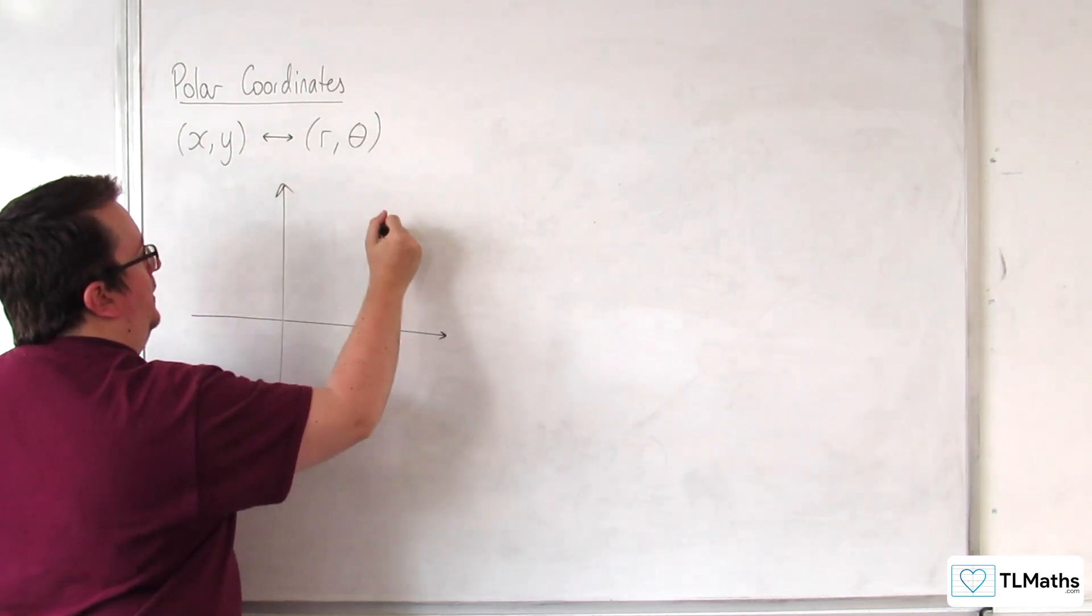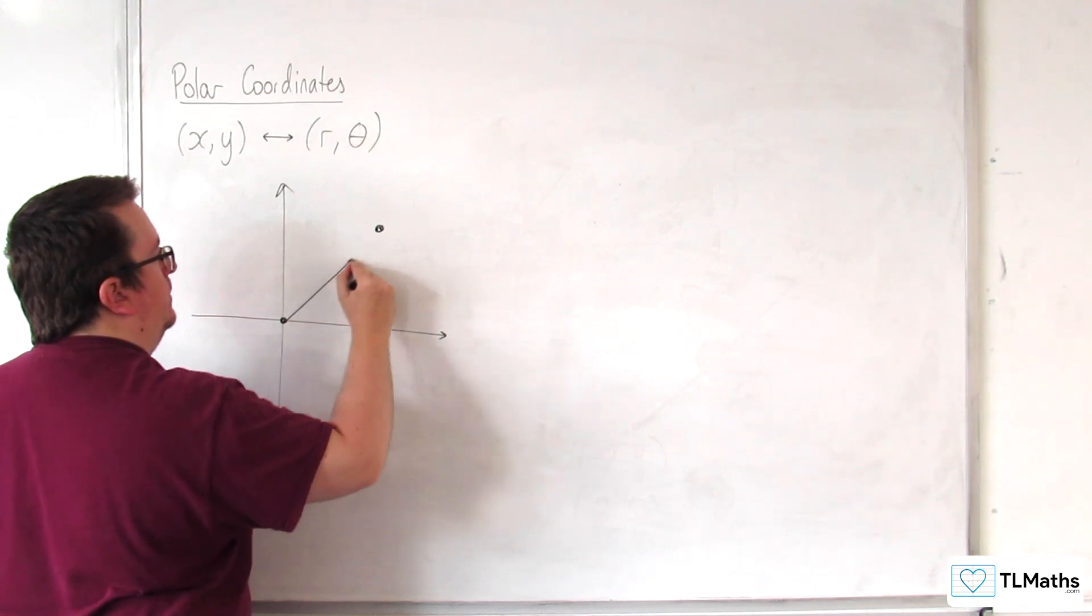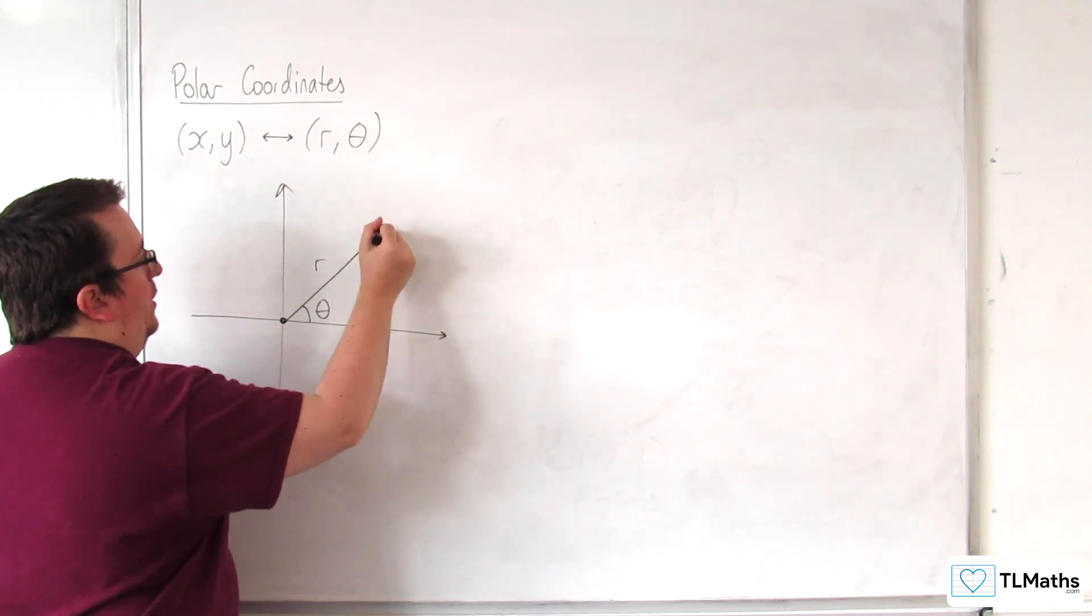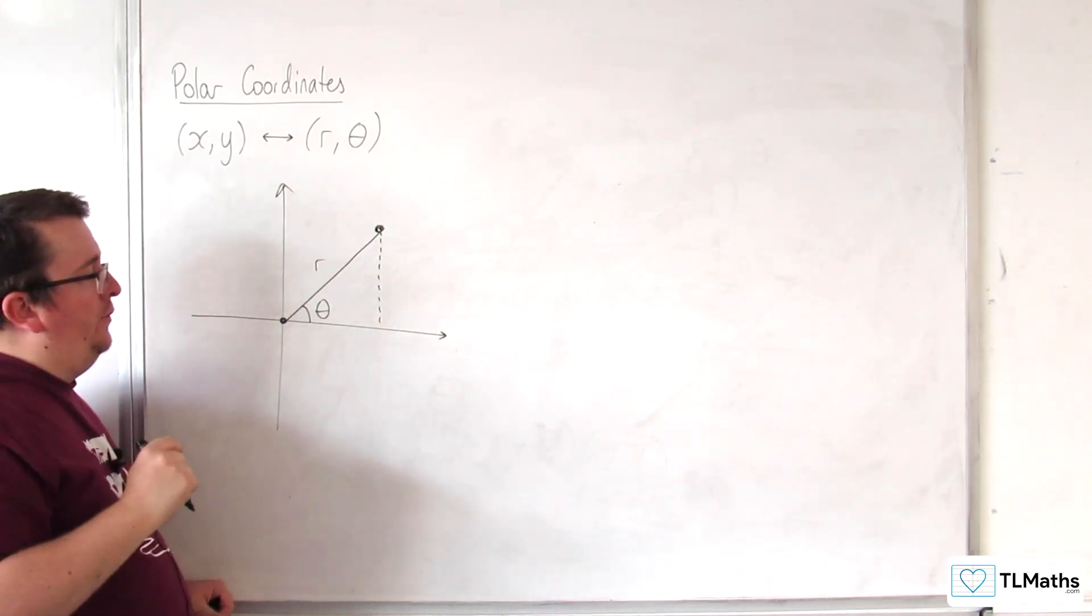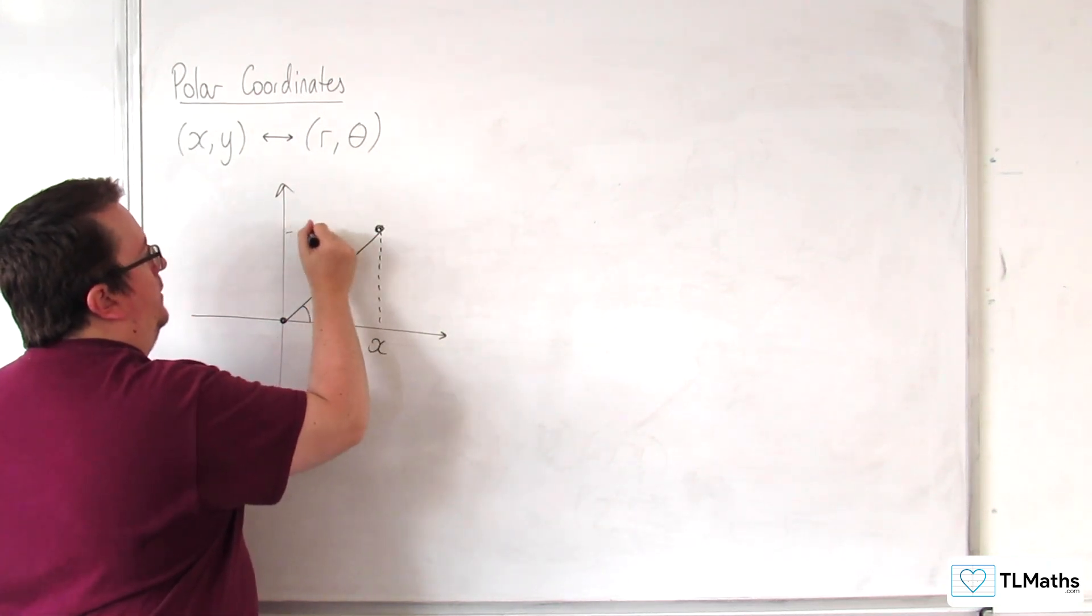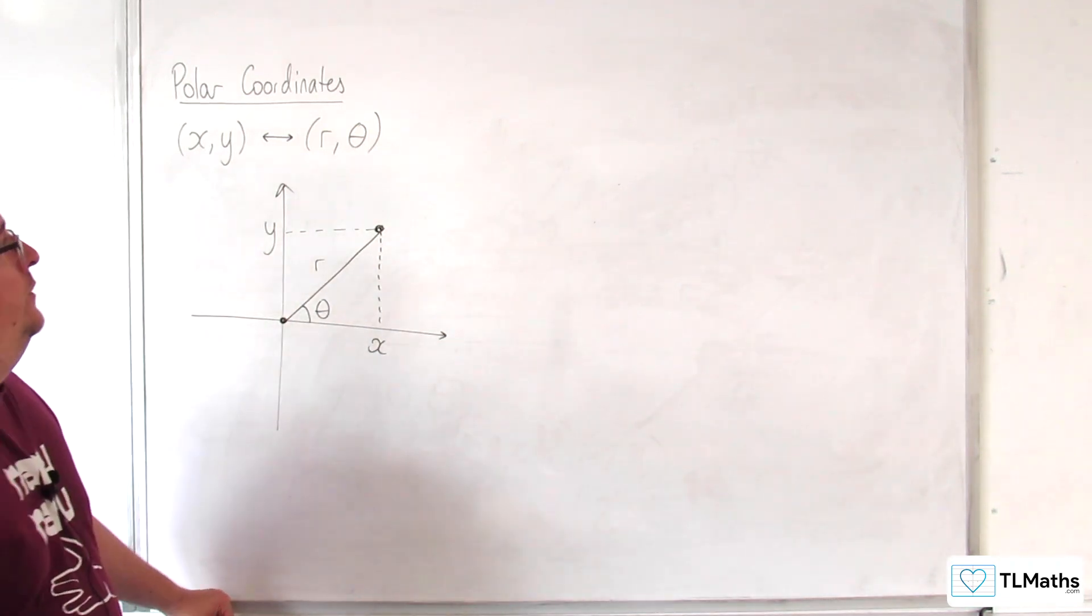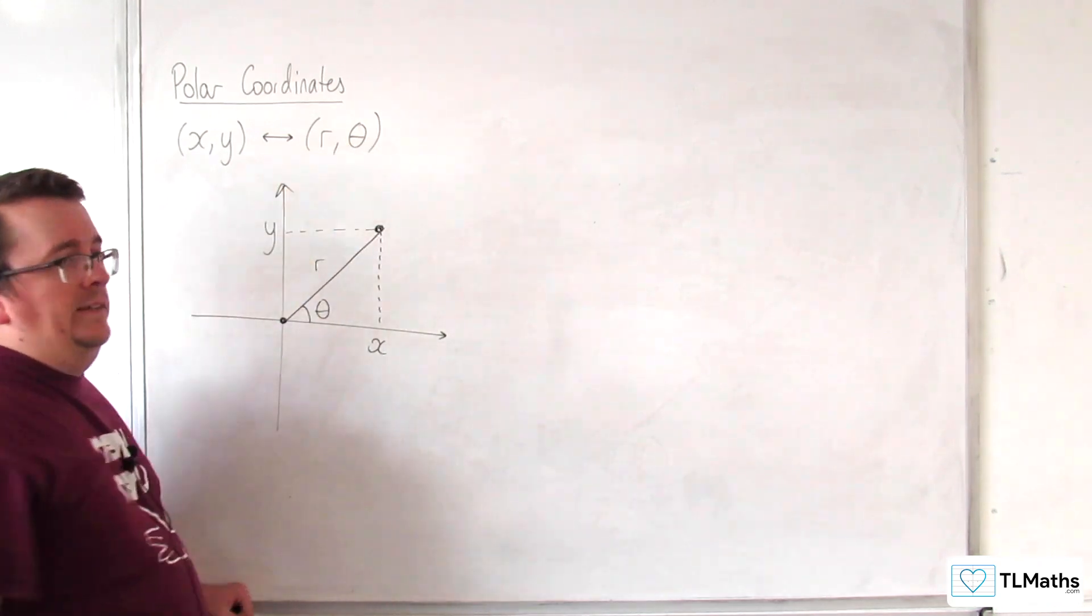So let's say this is our point, here's our pole, this is our initial line, here is R, and here is theta. The Cartesian coordinates would be X along and Y up. So this point has either Cartesian coordinates (X, Y) or polar coordinates (R, theta).